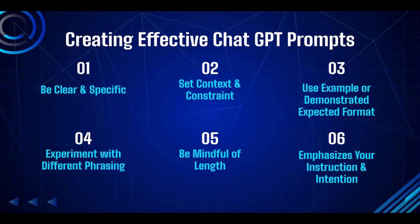Welcome back to the course. In this video, we're going to learn how to create effective ChatGPT prompts. There are six aspects you need to pay very close attention to. The first one: be very clear and specific. Create your prompts to provide clear instructions or ask specific questions to guide the model's response. Clearly define the desired outcome or the information you are seeking to obtain more accurate and targeted responses. When communicating with ChatGPT, it's crucial to make sure it understands what you want.